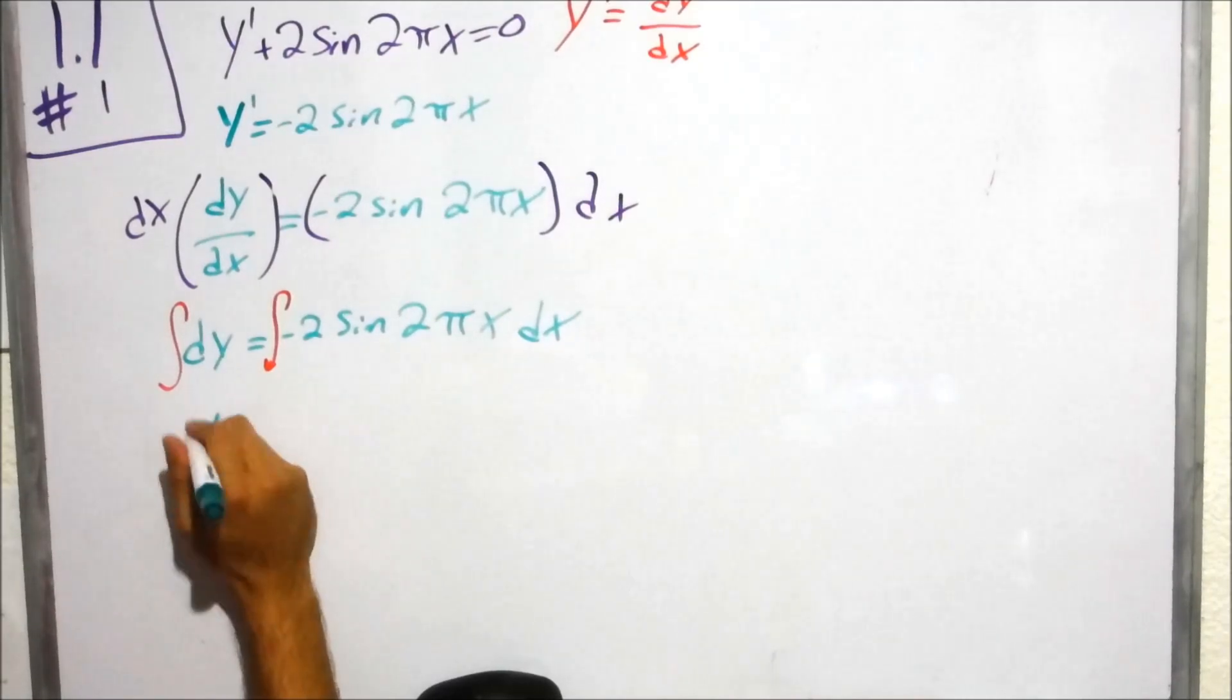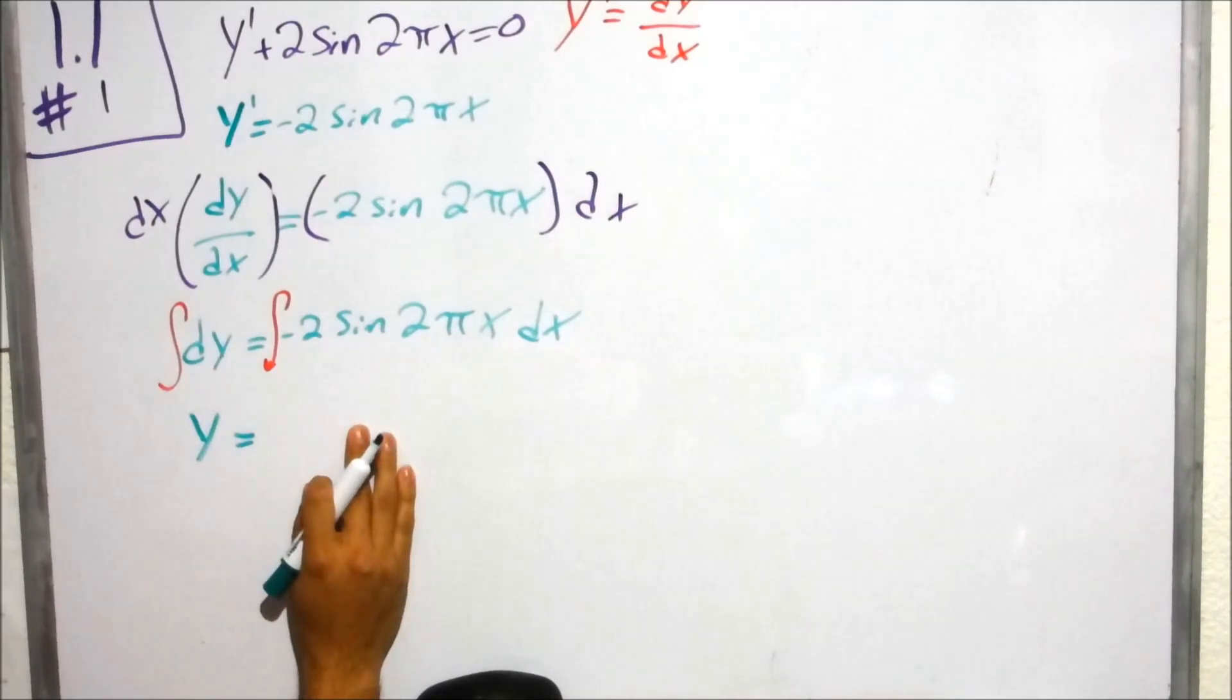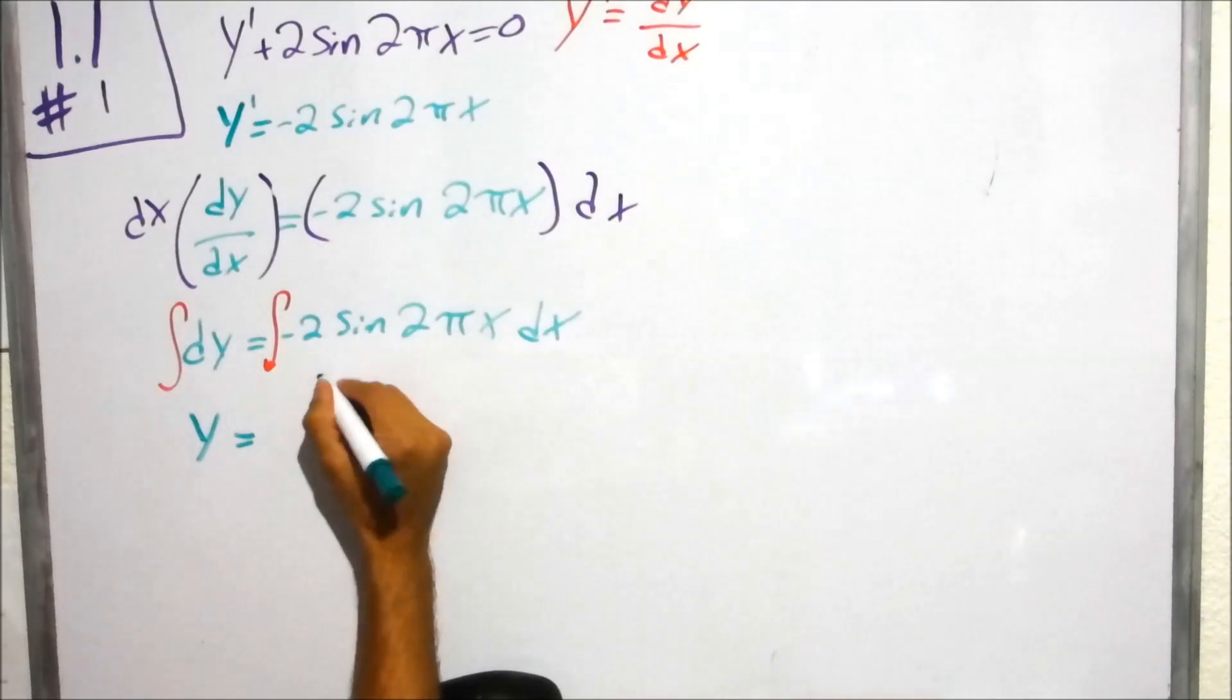So the integral of y is merely, of dy is merely y. And the integral of negative 2 sine of 2 pi x, hopefully by this point you guys are familiar with it, we can do it on the side here.